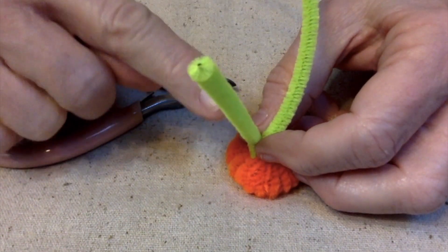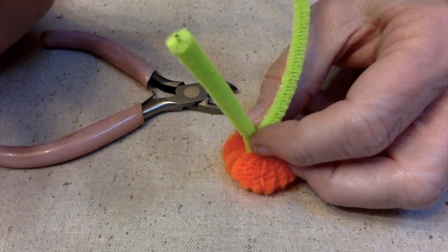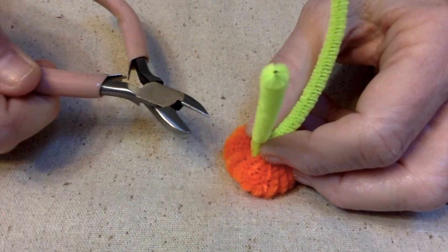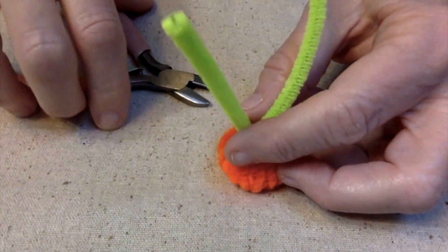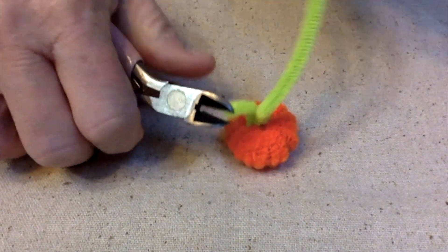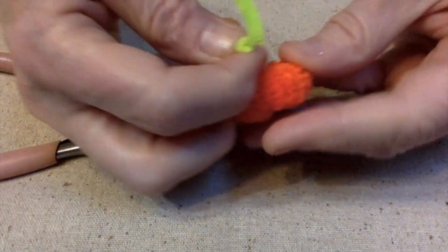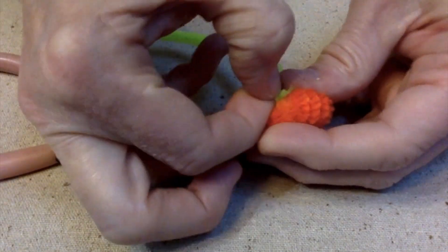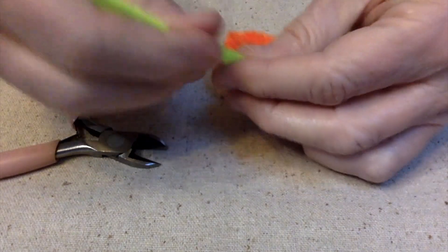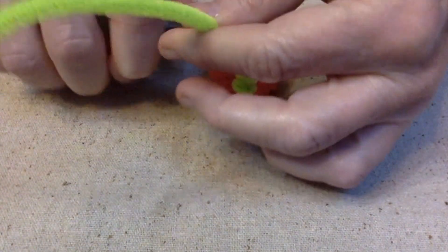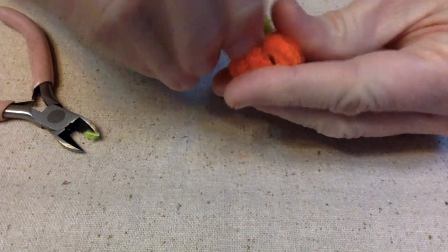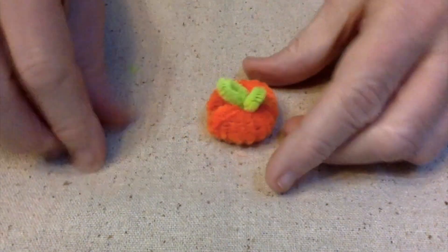Now, you're going to trim these. Do not use scissors unless you don't care to dull them. Wire cutters are the best. I've actually seen people use toenail clippers. But we're just going to clip this off like so. And bend it to form your leaf. And do the other side. And you are done.